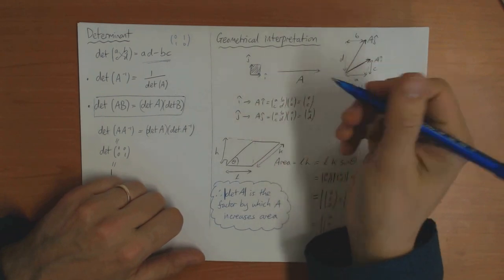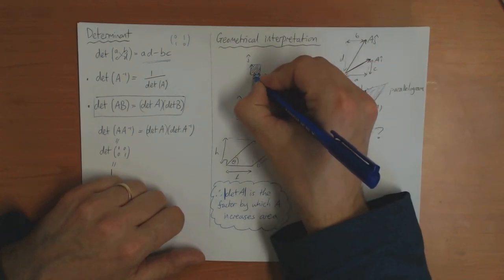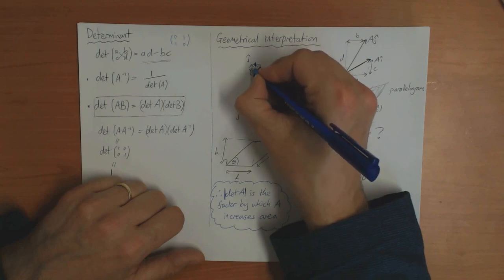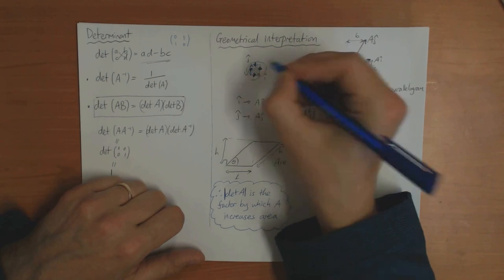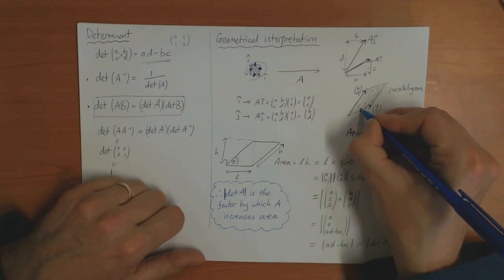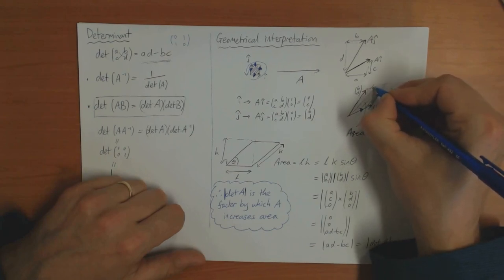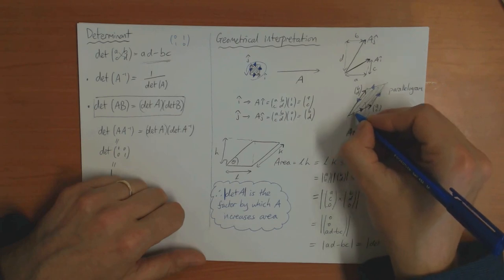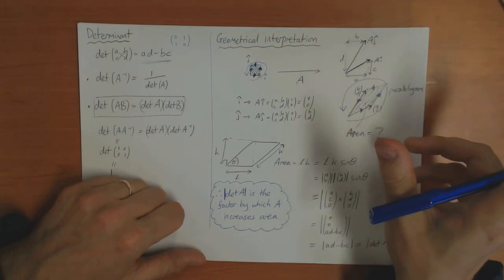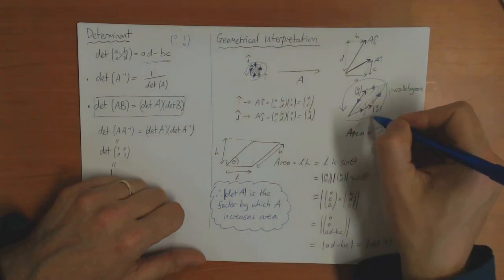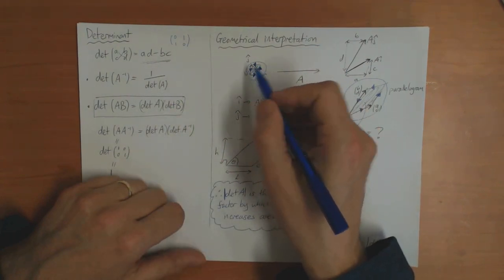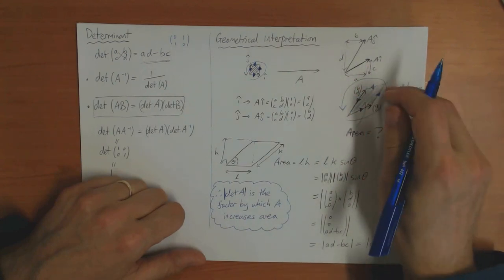If I start with the square and give it an orientation by going around it counterclockwise, then after the transformation I consider the parallelogram — what happens to that direction? I can trace around it and see that I am still going around in the counterclockwise direction. The rule is: if you start going counterclockwise and finish counterclockwise, the determinant is positive. But if the transformation turns you into a clockwise direction, the determinant is negative.